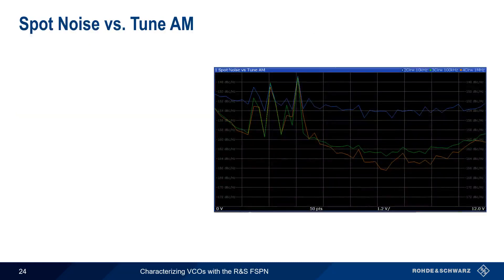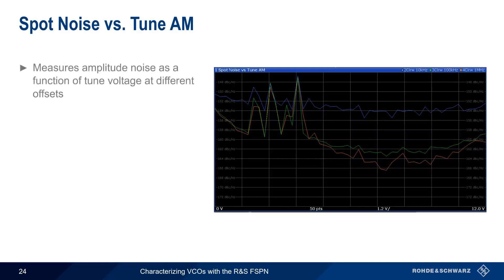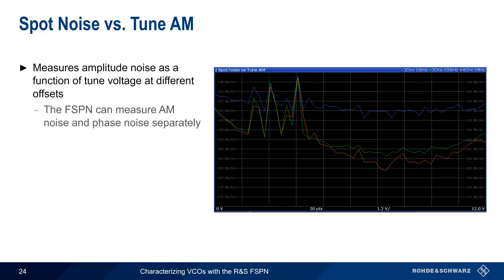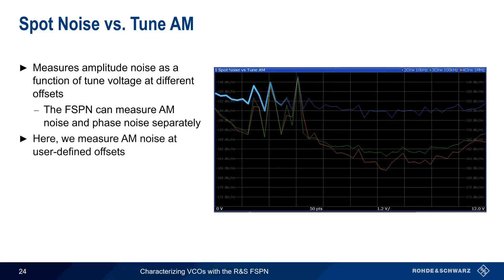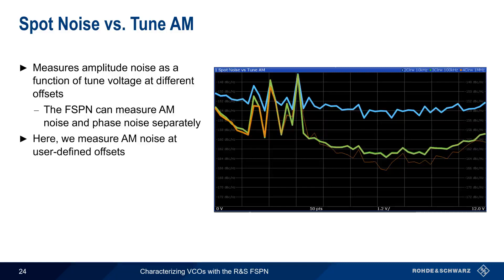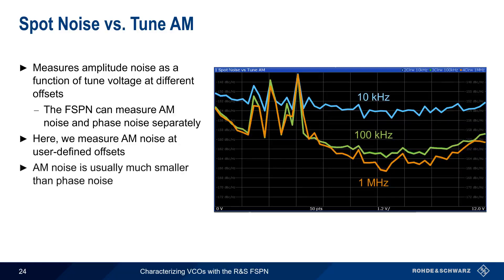These same parameters will need to be configured when making a spot noise versus tune AM measurement, which measures AM or amplitude noise as a function of tune voltage at different offsets. The architecture of the FSPN allows it to measure amplitude noise separately from phase noise. Here we're plotting amplitude noise at offsets of 10 kHz, 100 kHz, and 1 MHz. Note that AM noise is typically much smaller than phase noise.